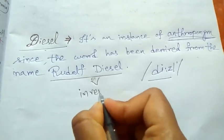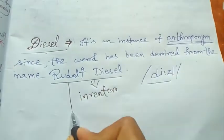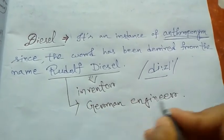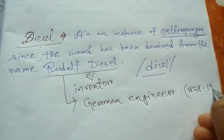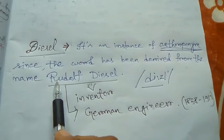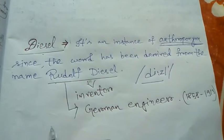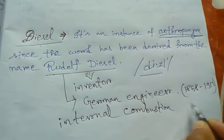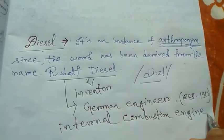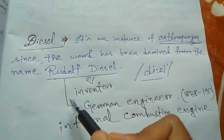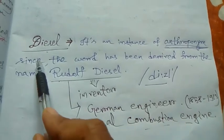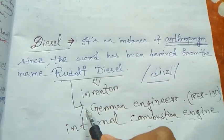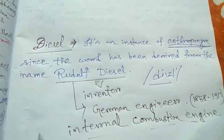Rudolf Diesel was a German engineer. He invented the internal combustion engine — specifically, an efficient compression ignition engine — and that engine bore his name, 'diesel.' This is why it is an instance of anthroponym.